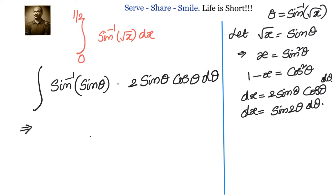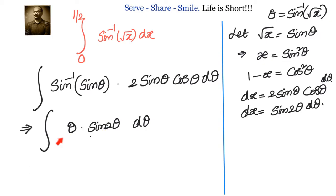Simplifying, we have the integral of θ · sin2θ dθ. We can find this by integration by parts. For integration by parts, we select our first and second functions: we take sin2θ as the second function and θ as the first function.